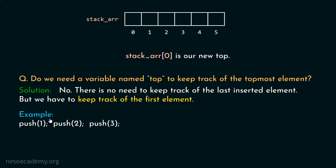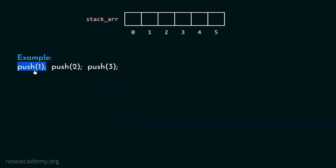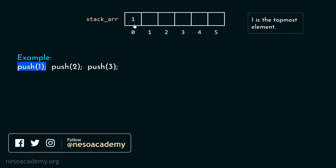In the previous presentations, we kept track of the topmost element because its position always changes with time. But here, we have to keep track of the first element instead. I am considering a simple example: push one, push two, push three. When we push one, element one is the topmost element. This is not the previous push function — this is a new push function that will push the topmost element at index zero. We will define this function later; right now understand the logic.